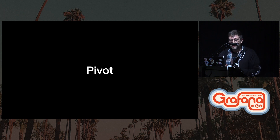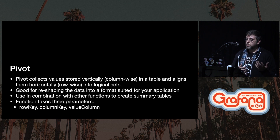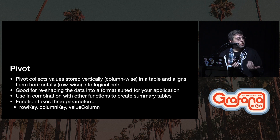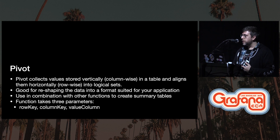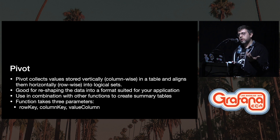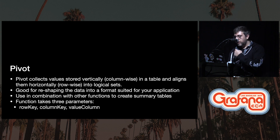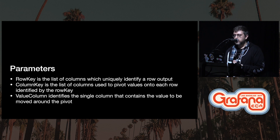The final function I wanted to talk about is pivot. The pivot function is pretty simple and standard — it collects values stored vertically column-wise in a table and aligns them horizontally row-wise into logical sets. That's really good for reshaping data into a format suited for your application. It can be used in combination with other functions to create summary tables, and it can also be really useful just for human beings. The pivot function takes three parameters: a row key, a column key, and a value column.